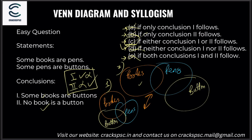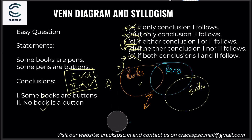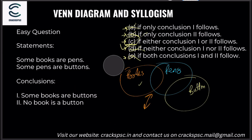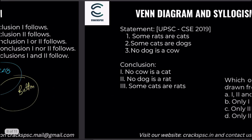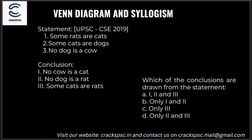That is how Venn diagrams work. A common mistake people make in syllogism is they just draw one diagram and go with it. The problem is you draw this diagram and say some books are buttons — yes — but then no book is a button fails. You need to consider both possible diagrams. This is the classic mistake — stop doing it!